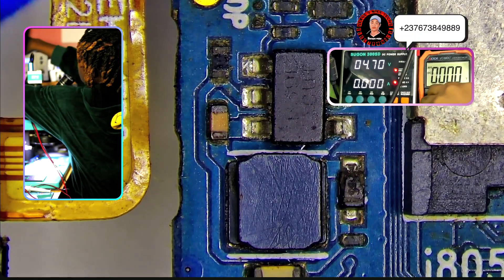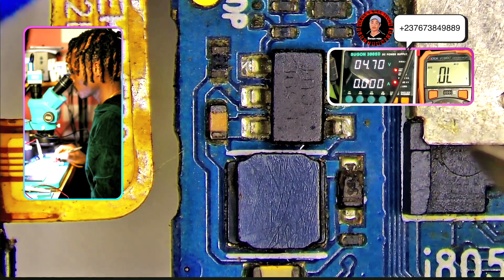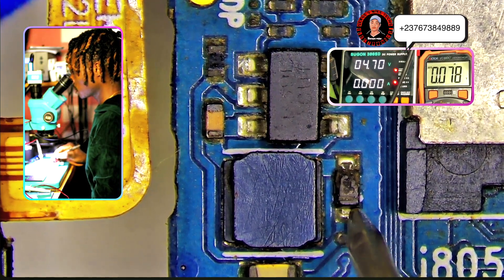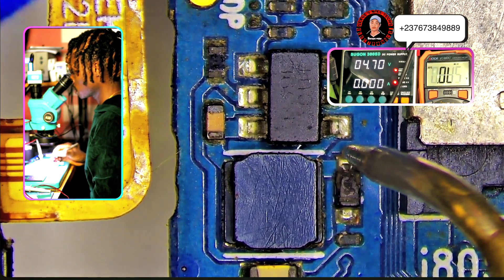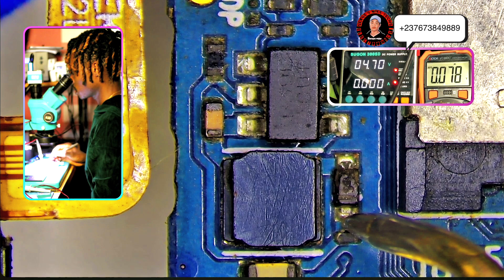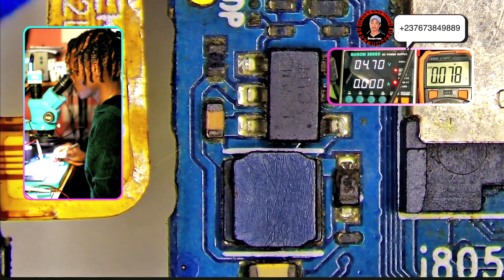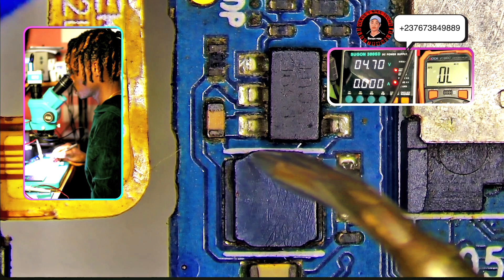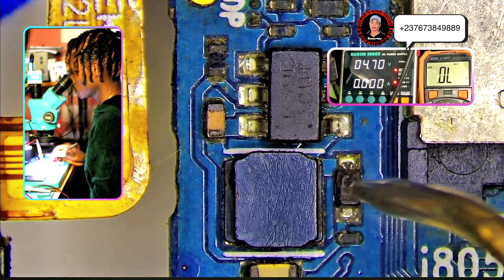I set my multimeter to continuity test mode. That's the output that is going to the backlight section. You can see that's a low reading. There is supposed to be a very high reading there because it deals with a high amount of voltage. I also checked the other sections and the reading is okay.